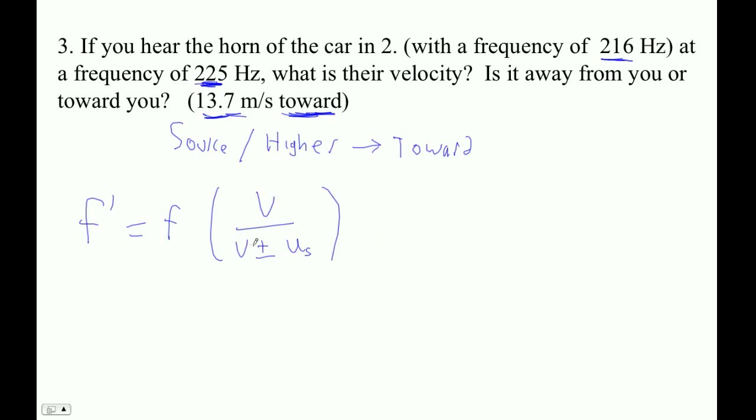So let's just plug our numbers in. We've got 225 = 216(343/(343 - us)). By the way, since we're solving for this velocity, if you make a mistake with the plus or minus, you'll just get a negative of the right answer.